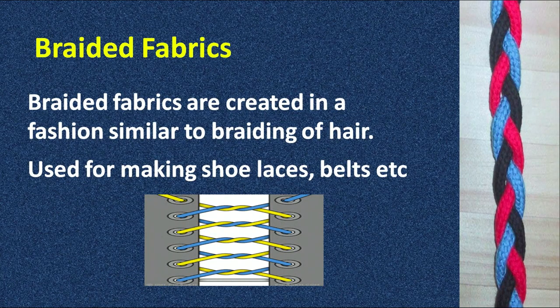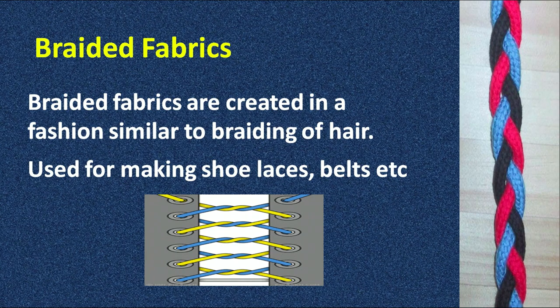Now we will discuss about braided fabrics. You must have seen your mother braid your hair to make a braided hairstyle, where three sets of yarn are interwoven into a braided format. As you can see in the picture, braided fabrics are created in a fashion similar to braiding of hair. Braided fabrics are mostly used for making shoelaces, belts, and other articles — you can also make coasters, door mats, or even carpets by this process of braiding. Jute bags and jute ropes are also made using braiding.